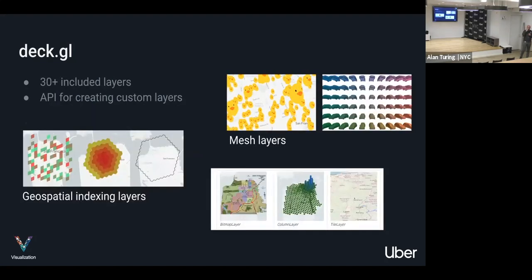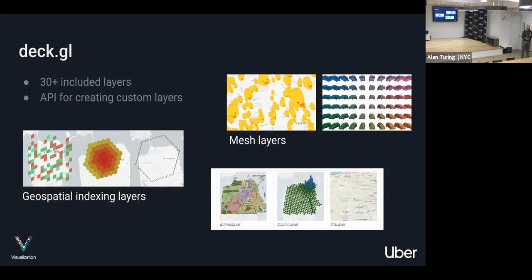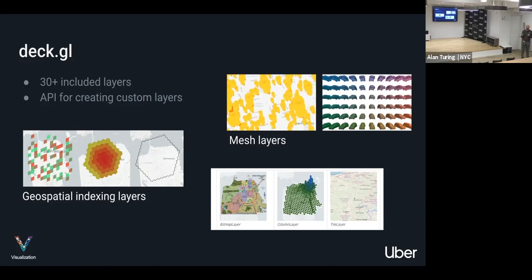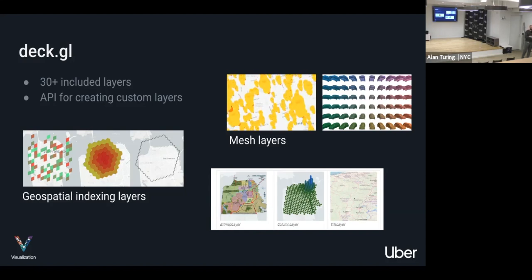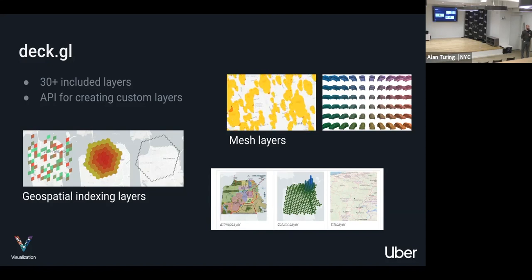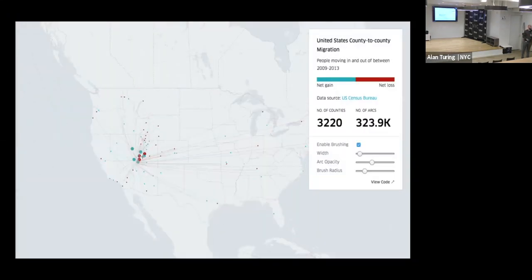Here are examples of the different layer types. There's the indexing layer, which splits the map into quantized units and does aggregations. The mesh layer is for rendering 3D meshes — autonomous driving is the main use case for that. Then there's the columns layer if you want height associated with your data, and a bitmap layer for drawing arbitrary shapes on the map.